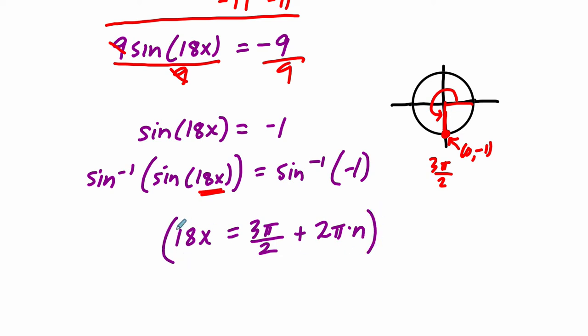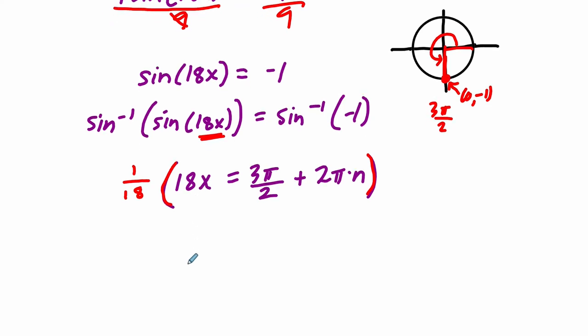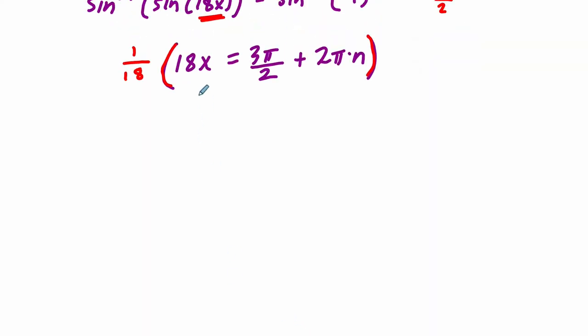We can divide both sides by 18, or just multiply everything by 1/18th. And what will that get us? Well, let's scroll up here. These 18s cancel, so now we just have x. 3 times 1 is 3, 2 times 18 is 36, so we have 3 pi over 36, plus 2 pi over 18, times n, and x equals pi over 12, plus pi over 9, times n. So x can be any of these values here.